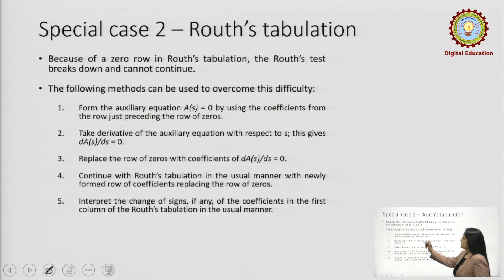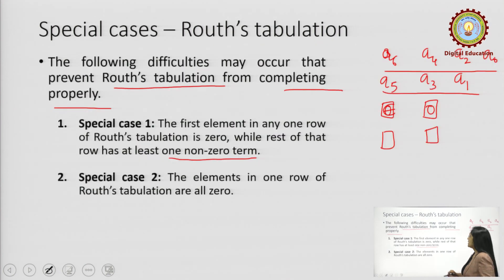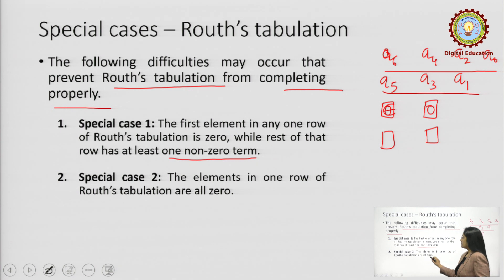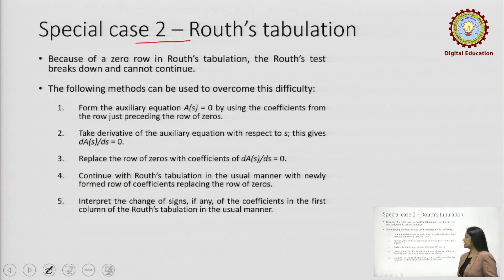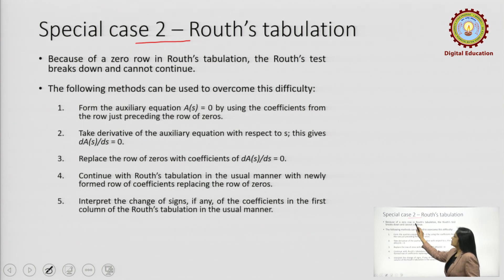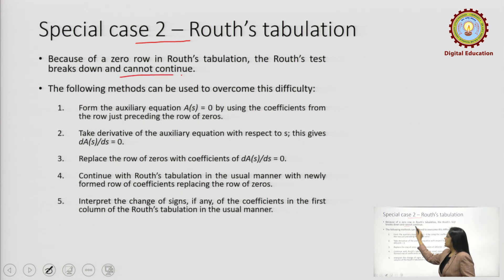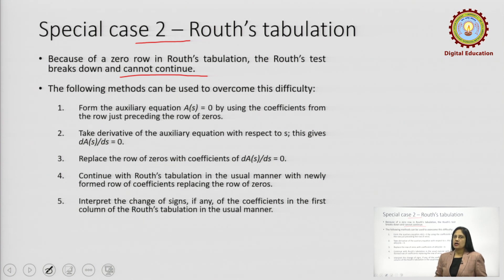Special case 2 is that the elements in one row of the Routh's tabulation are all zero — that is, both or all elements of a particular row become zero. Because of this zero row, the Routh's test breaks down and cannot continue, since we have a zero and the tabulation cannot be completed.